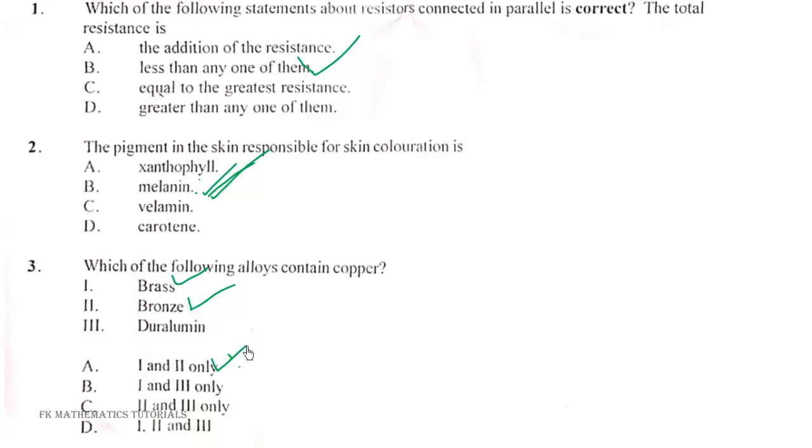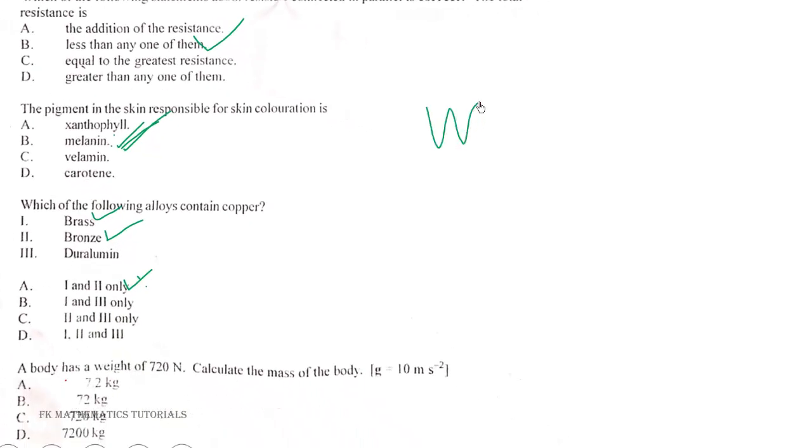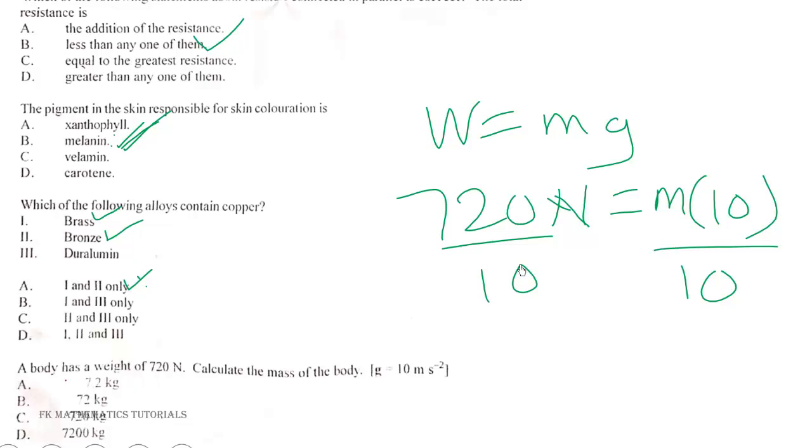Question 4. A body has a weight of 720 newtons. Calculate the mass of the body. Weight is equal to mass times gravity due to acceleration. So if the weight is 720 newtons and gravity is 10 meters per second squared, dividing through by 10, we get 72 kg. The correct answer is B.